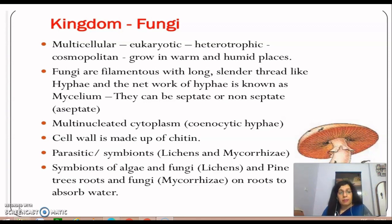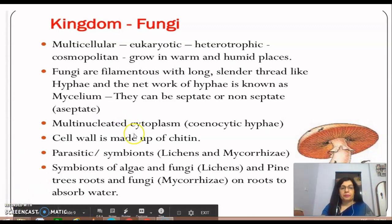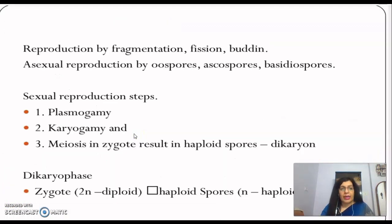Fungi can be parasitic or symbiotic. In a symbiotic relationship, both organisms equally help each other. In lichens, the fungus is in a relationship with algae — fungi provide nutrients and algae make food for them. In the case of pine trees, the association of fungus with roots is called mycorrhizae, and they help provide phosphorus and nutrients through the roots.